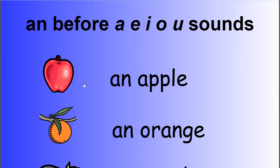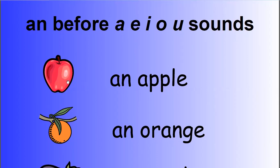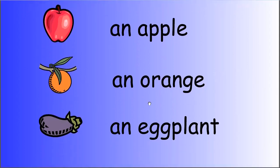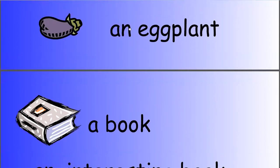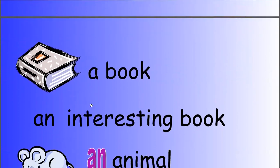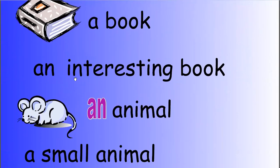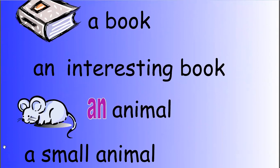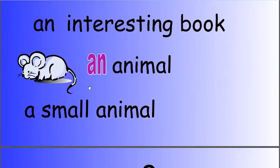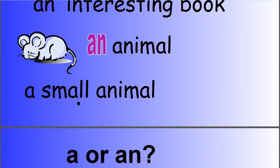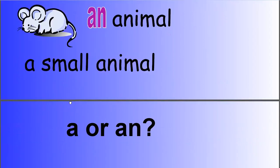These are vowel sounds. An apple, an orange, an eggplant. A book, an interesting book. An animal, a small animal. Here we use an because a is vowel. And here we use a because s is not a vowel. It's a constant.